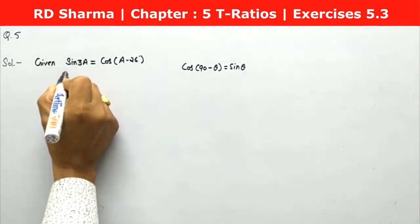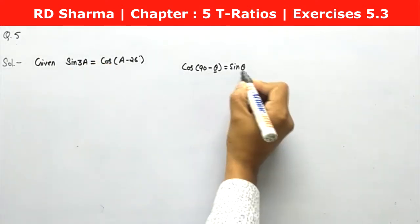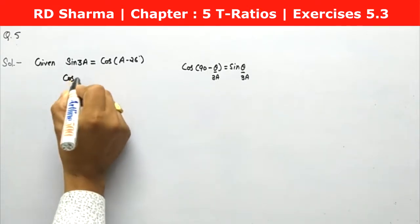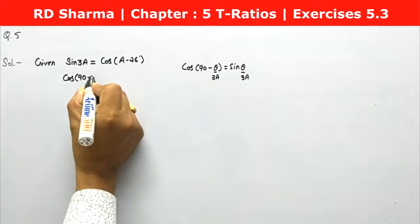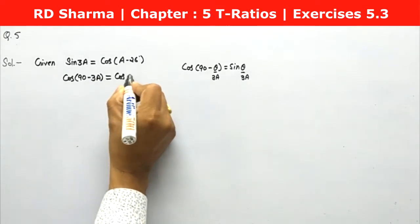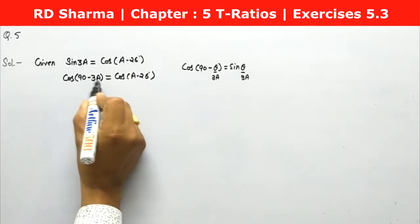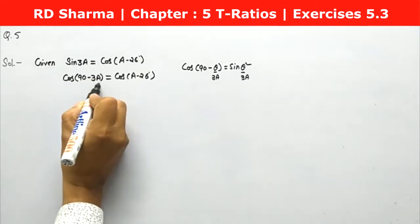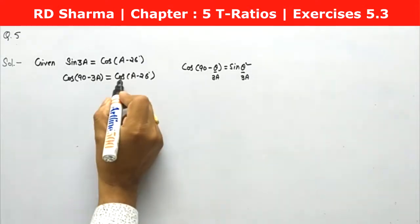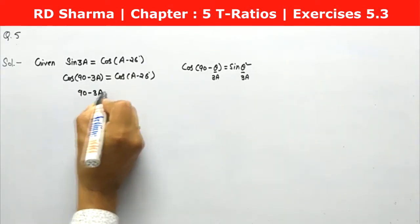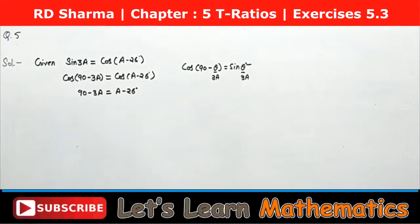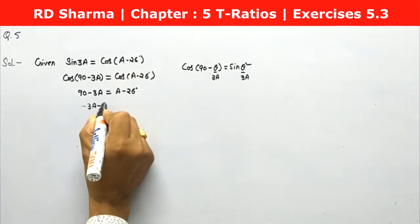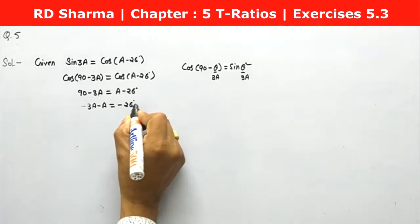This is the complementary angle relationship. So we replace sine(3a) with cos(90 minus 3a). Now both sides are cosine functions, so cosine cancels from both sides. We are left with: 90 minus 3a equals a minus 26 degrees.